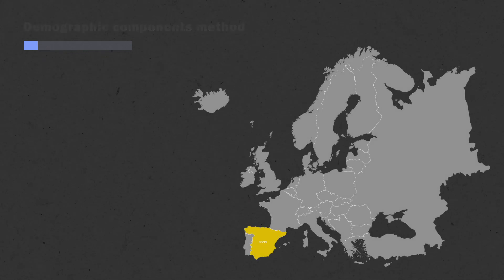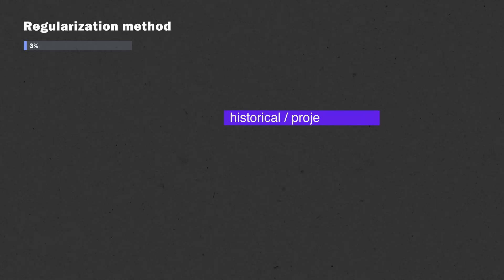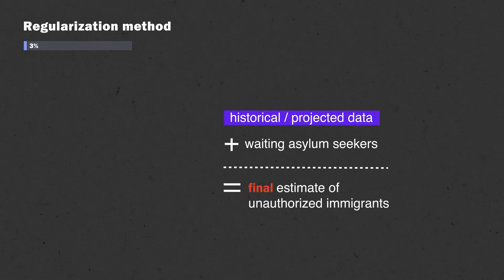For Spain, where an active program allows unauthorized immigrants to gain lawful residency after three years in the country, our regularization method worked best. Here, we added historical and projected data on the number of people accepted through that program to the number of waiting asylum seekers.